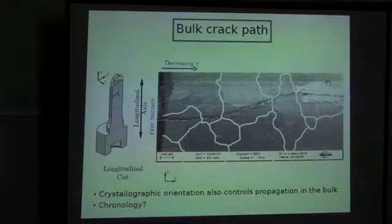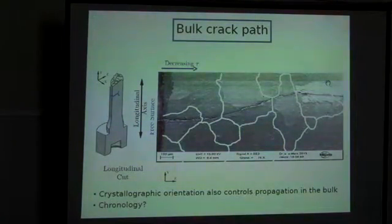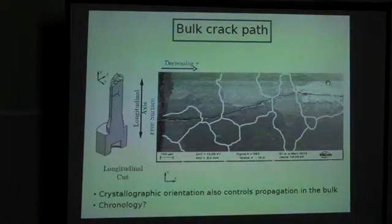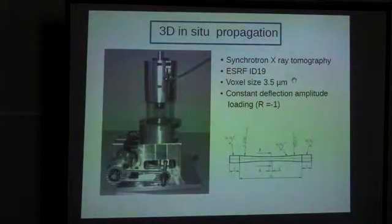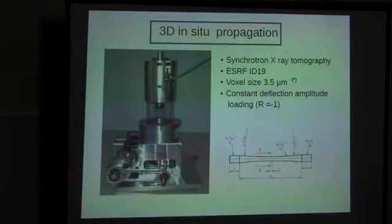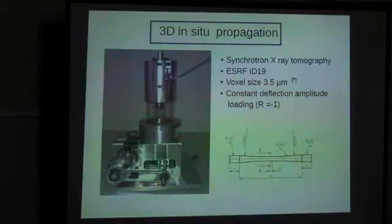We would like to know what's happening in real time, and to do this we used synchrotron X-ray tomography — a well-known technique to follow what's happening in the bulk of an optically opaque material like a metal. We have used synchrotron X-ray tomography at ESRF, working on beamline ID19. The voxel size, which is the equivalent of the pixel size for a 2D image, is 2.5 microns.